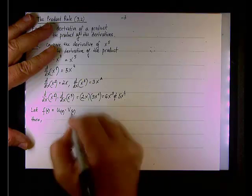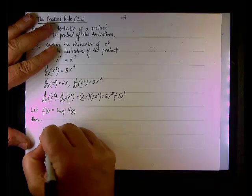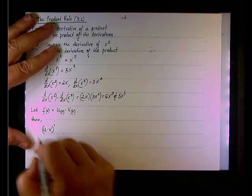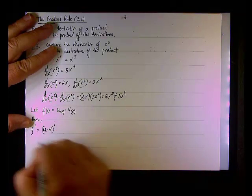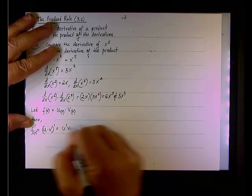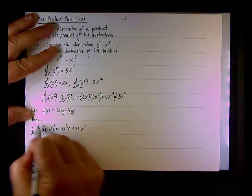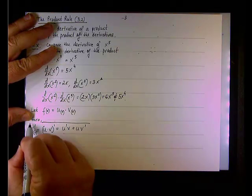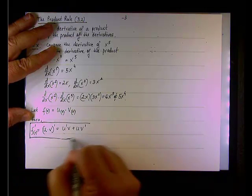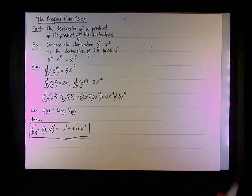The simplest notation would be if we take the derivative u times v prime, like so. Well, this is, of course, f prime, right? Then, it would be u prime v plus u v prime. This is a very compact form.